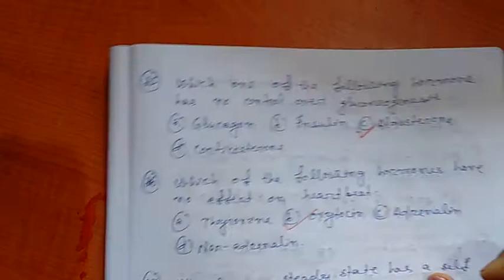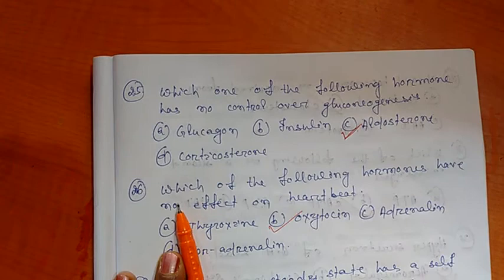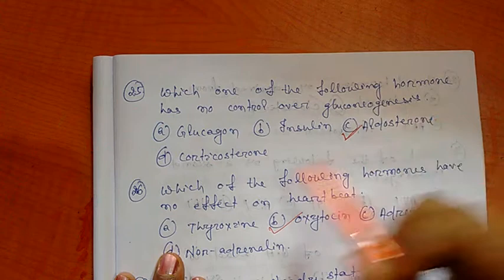Question number 25: Which one of the following hormones has more control over gluconeogenesis? The right option is aldosterone among the four options: glucagon, insulin, aldosterone, and corticosterone.